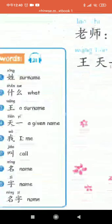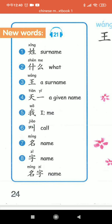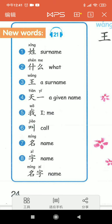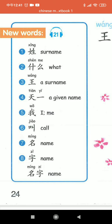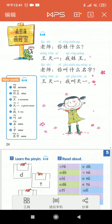Now look at the new words here. Let's read them one by one: 姓, 什么.